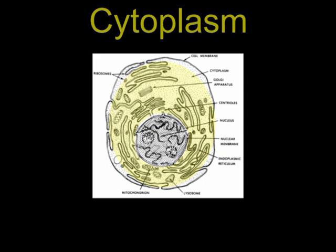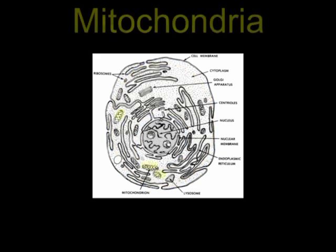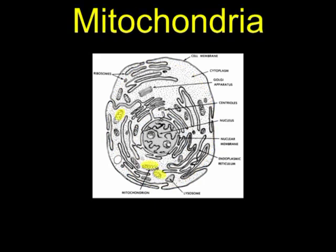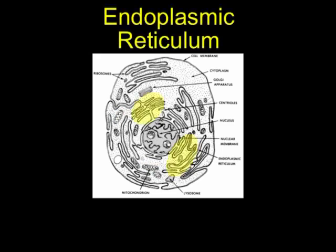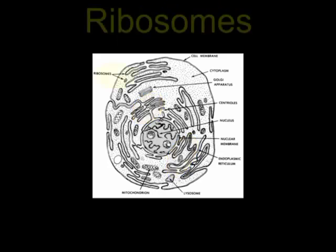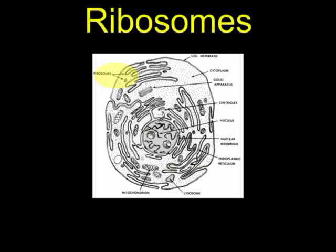Mitochondria are the powerhouses of the cell, providing energy for cellular functions. The endoplasmic reticulum is a network of membranes, cavities, and canals that helps in the transfer of materials from one part of the cell to another. Ribosomes are protein factories in the cell, composed mainly of nucleic acids, which help make proteins according to instructions provided by the genes.